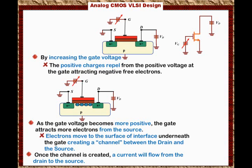This is a very powerful observation. By applying a positive voltage to the gate, the gate attracts negative electrons from the source and repels positive holes from the bulk. This creates a channel between the drain and the source so that current can conduct from drain to source. This process is called creating a channel.